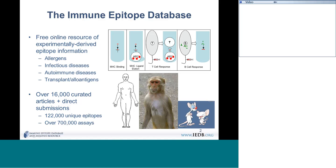One thing we always have to stress: the IEDB is funded by NIH, and the goal is really that we are going to make epitope information widely available for the community. Our scope is allergens, infectious diseases, autoimmune diseases, and transplant and allo end.